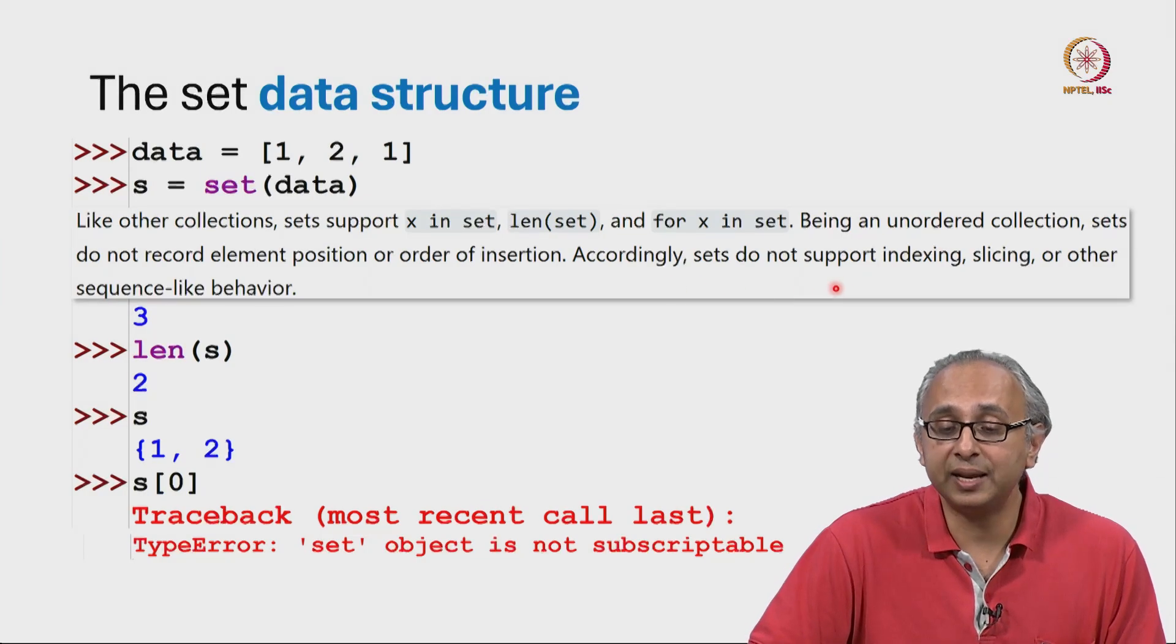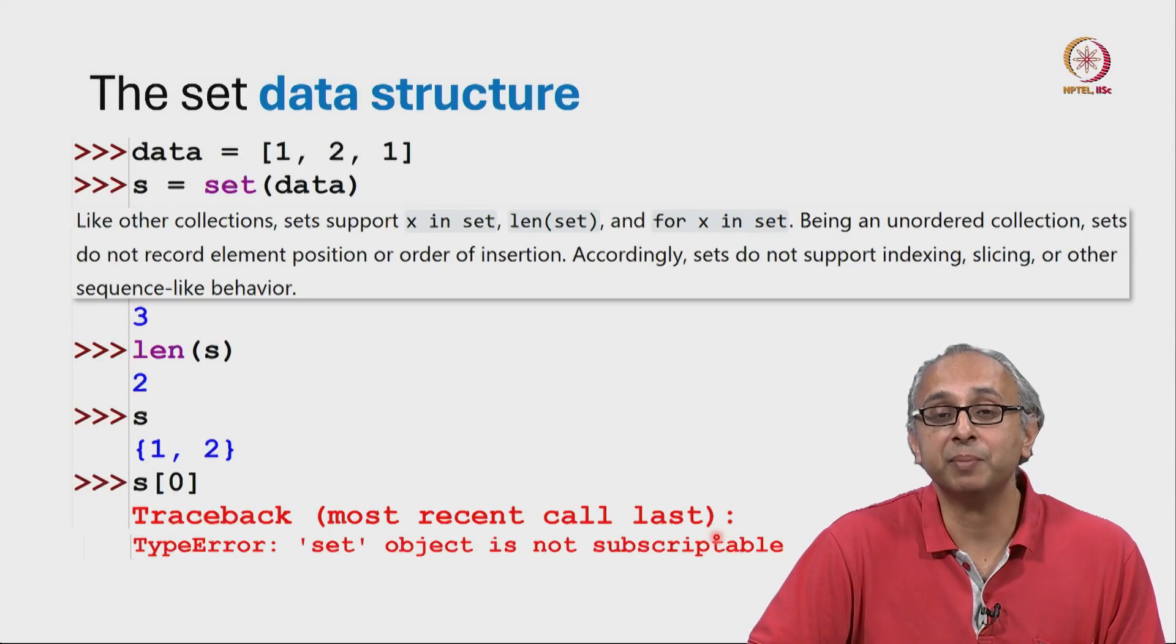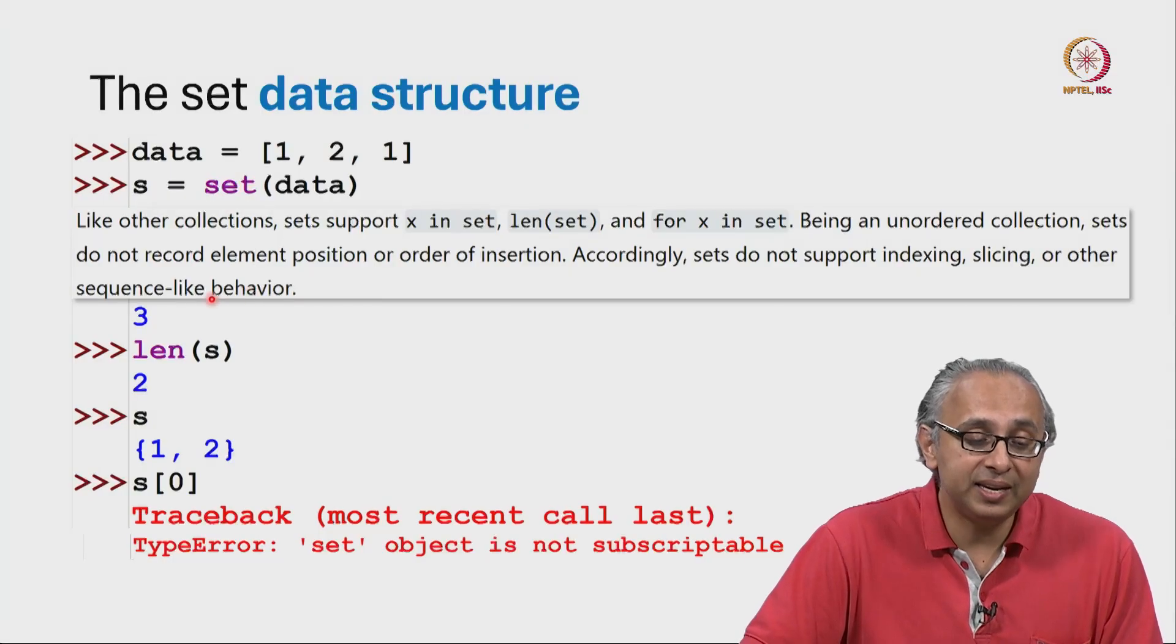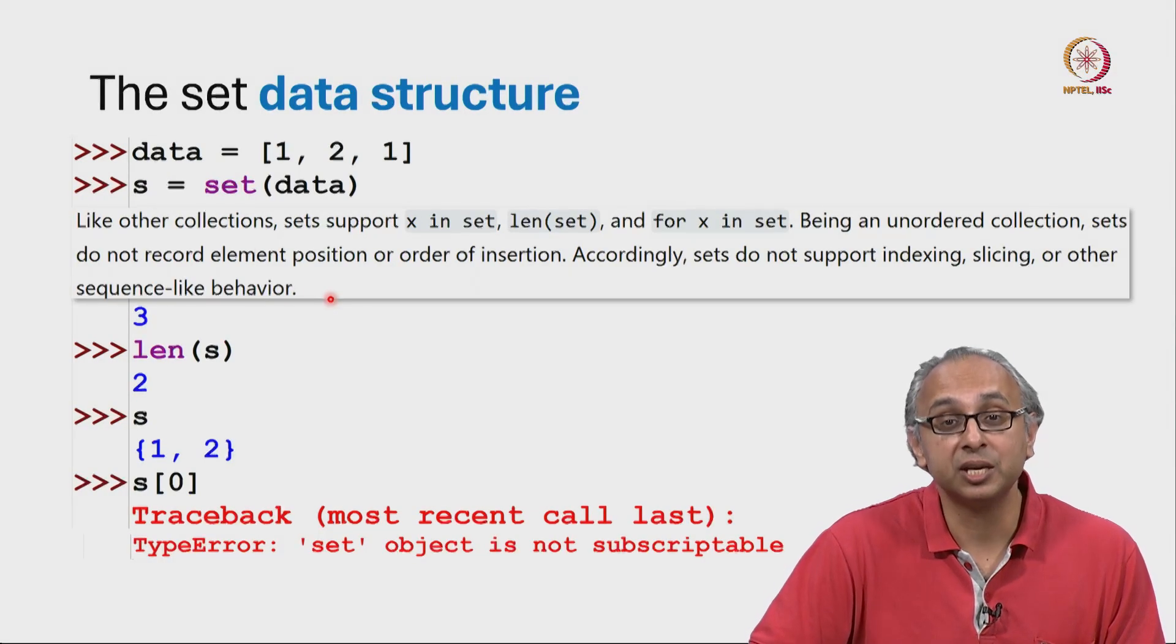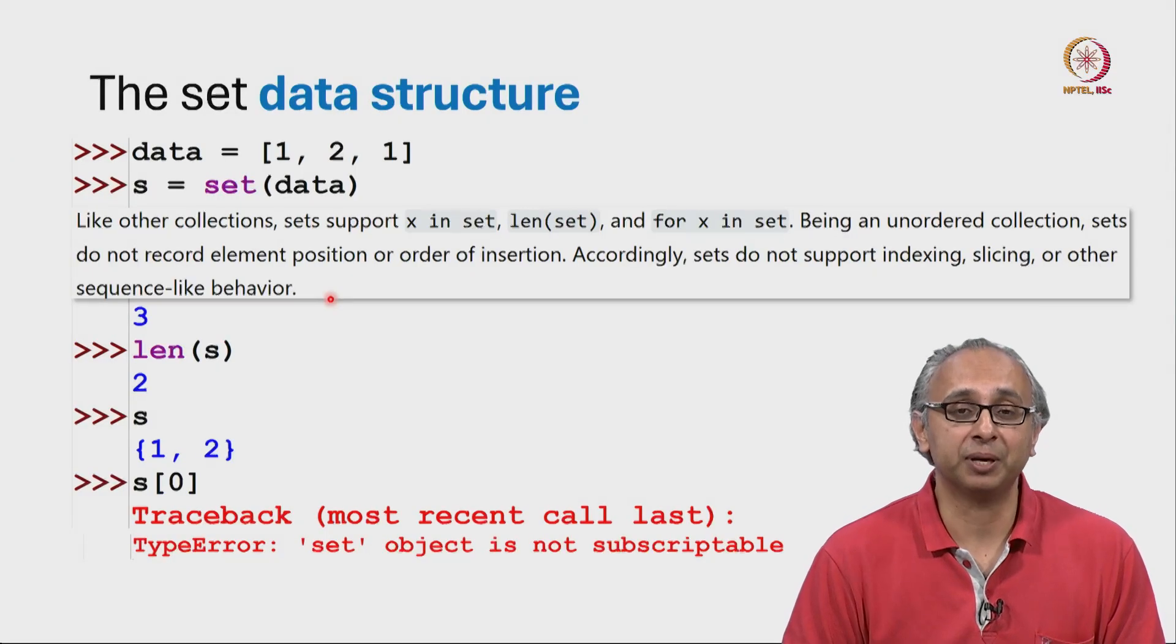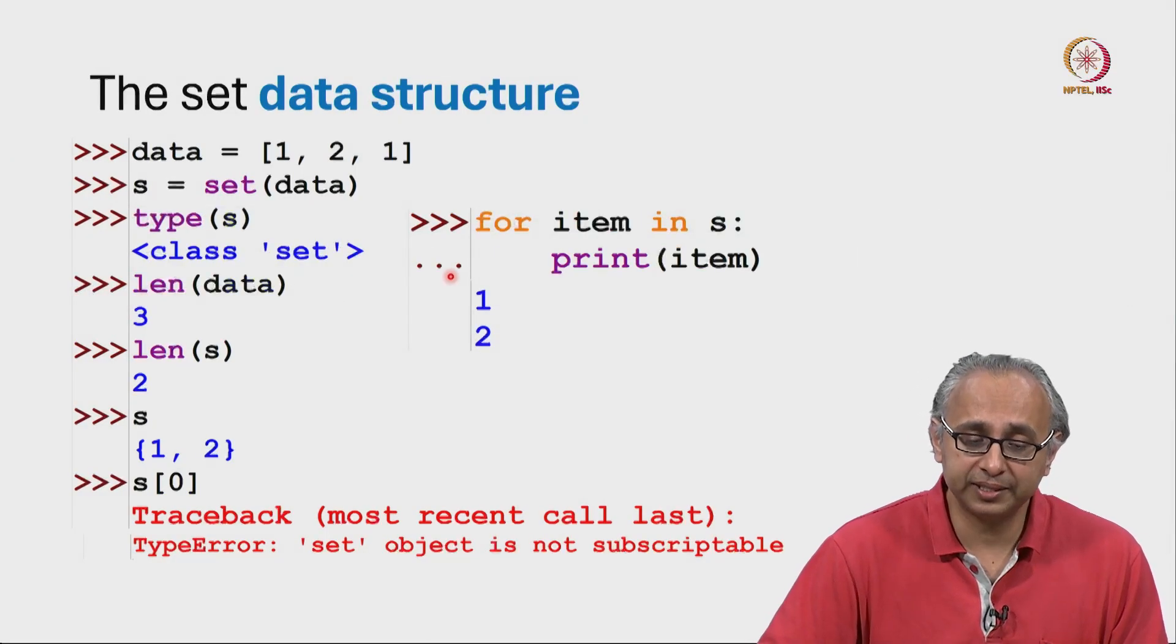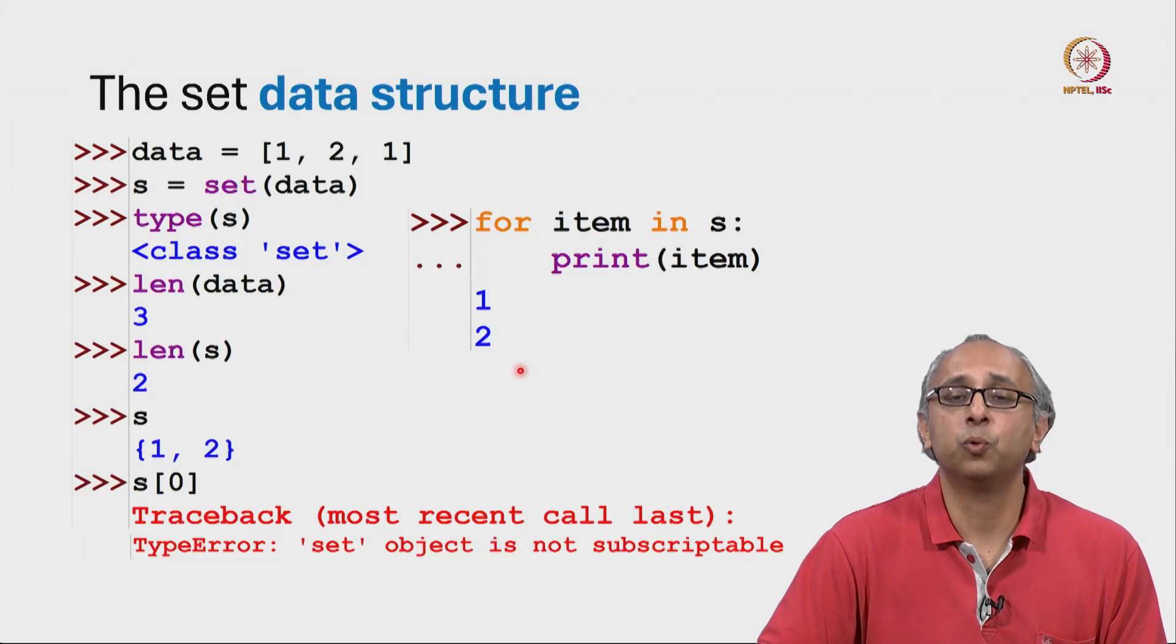The documentation goes on to tell us that sets do not support indexing, that's why we got this error message and similarly, they do not support slicing or any other behaviour that we have seen for sequences. So sets are not sequences but we can iterate through them using a for loop as this example shows. So for each item in S, we can print that item and then we will see the values 1 and 2.